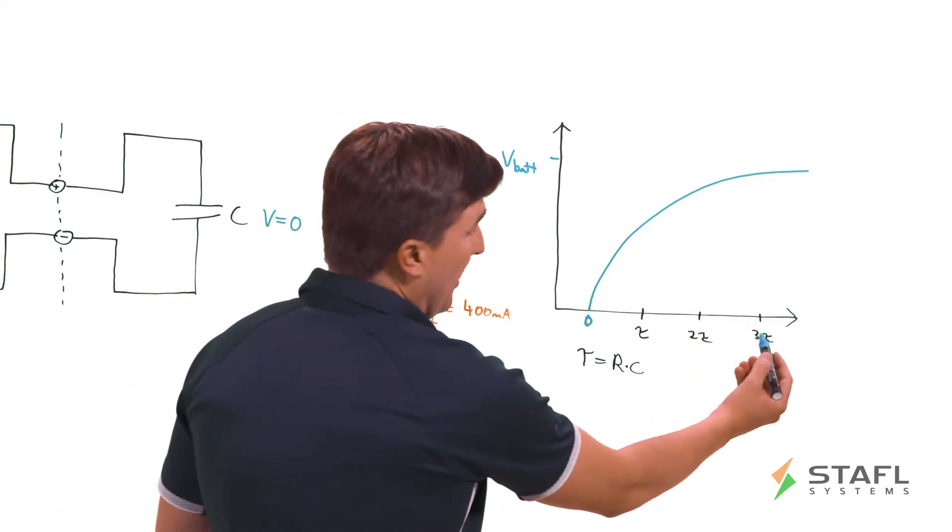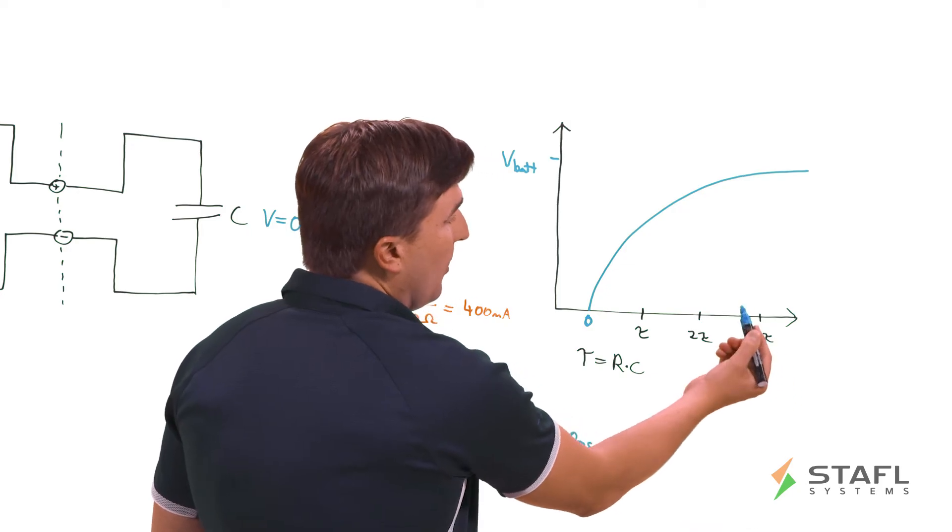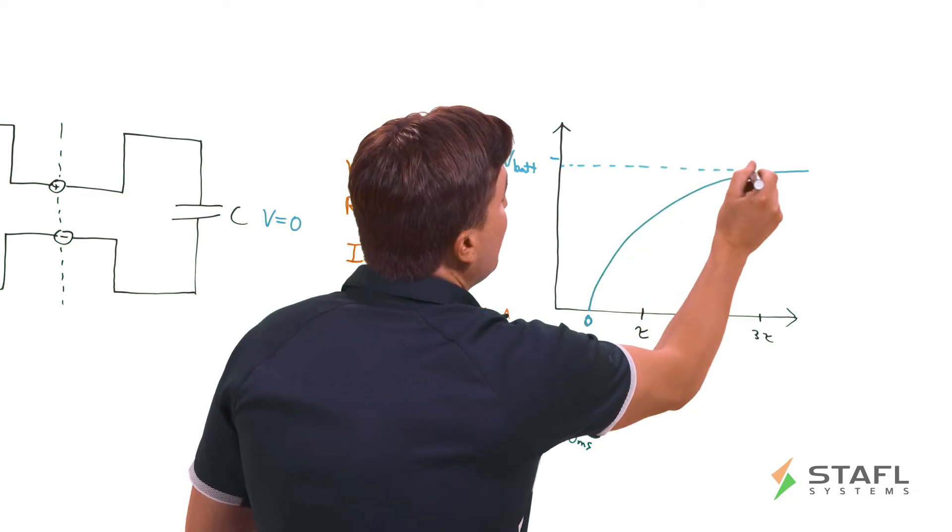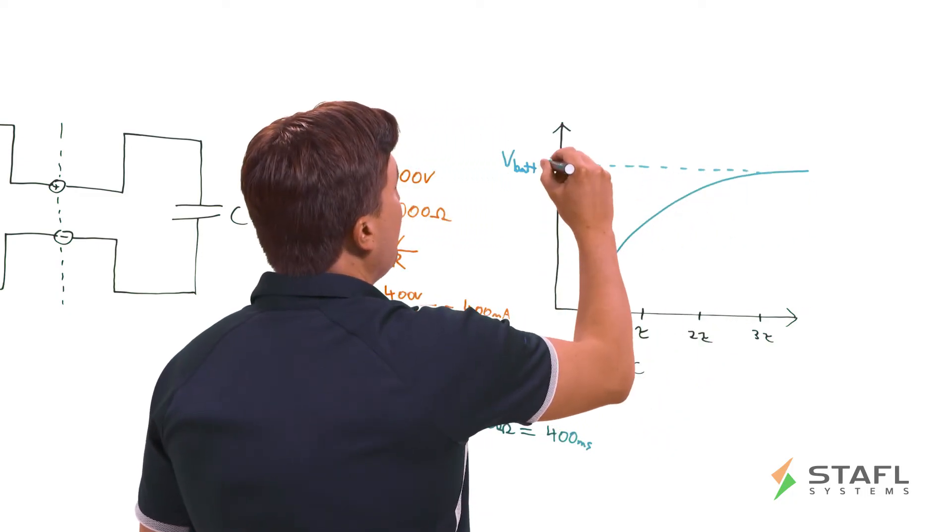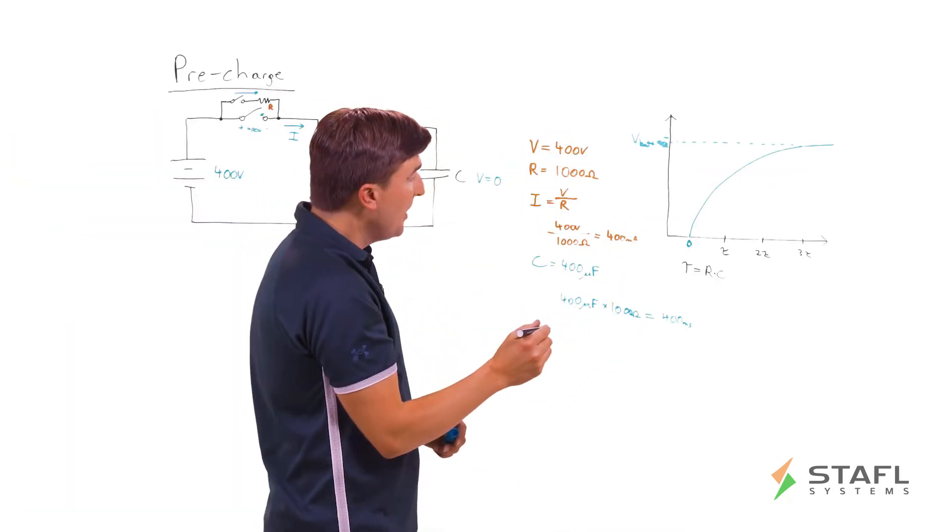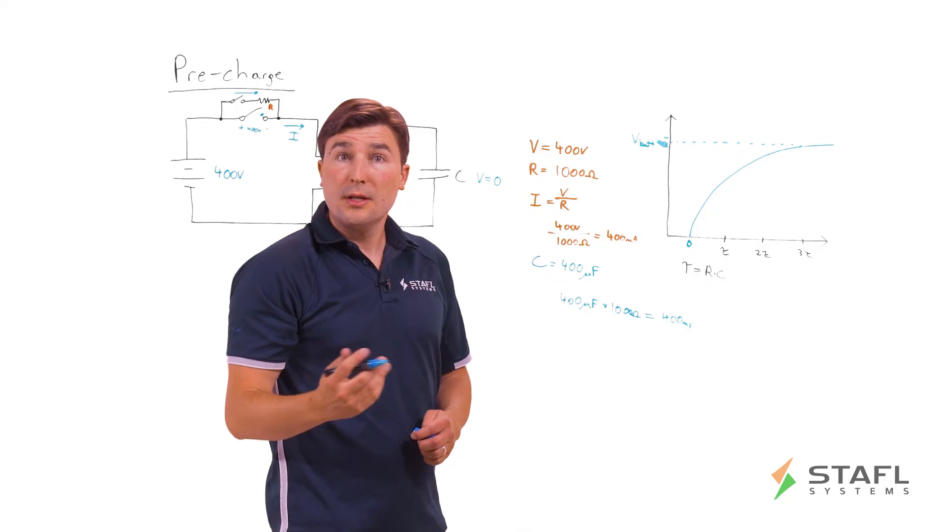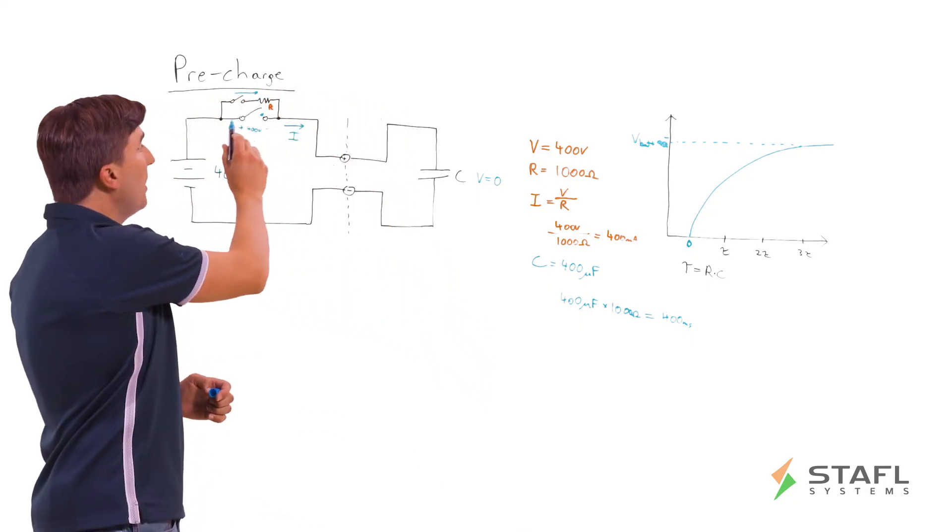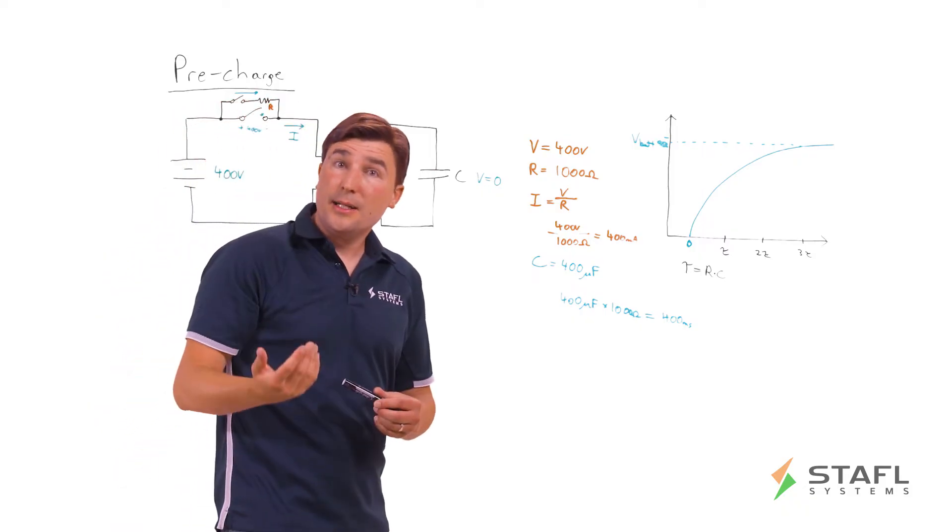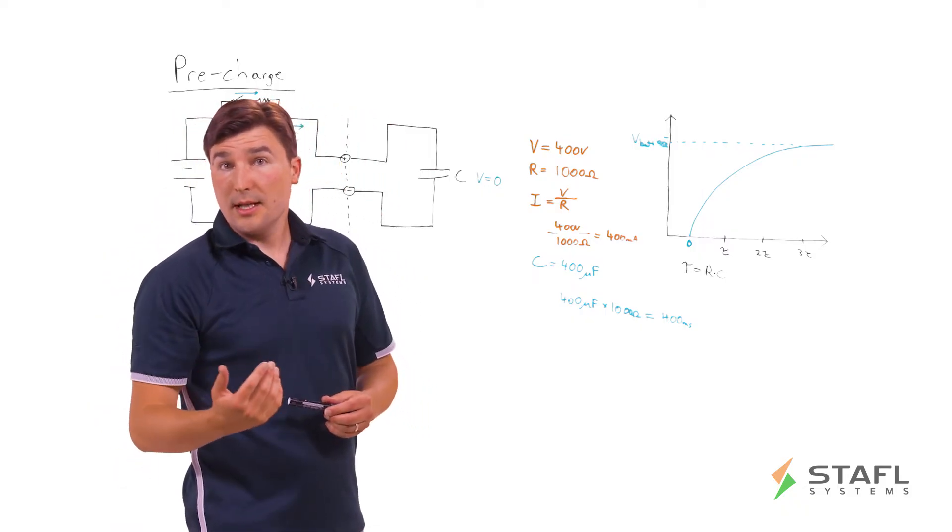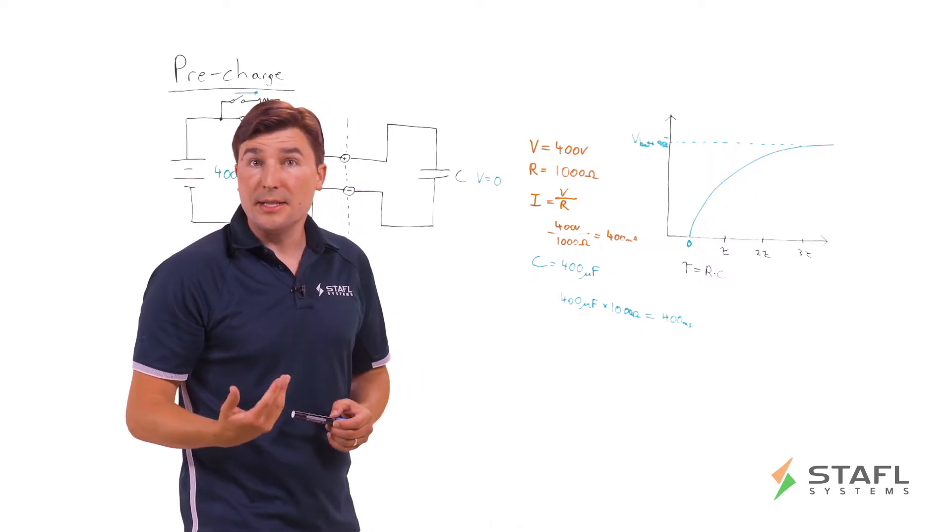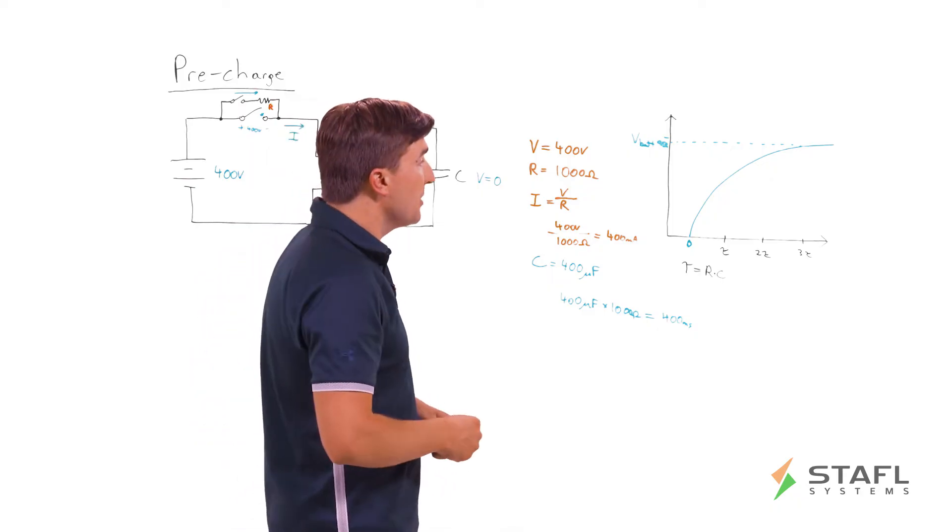So in this situation, we would expect that in 1.2 seconds, our voltage would be within 5% of the battery voltage. So in this case, 95% of the total battery voltage. And generally speaking, that is considered enough to close the main switch. Some systems you might want to select the threshold at 90% or 97%. There's some advanced calculations there. But generally speaking, three time constants or 95% is considered sufficient to close your main switch.